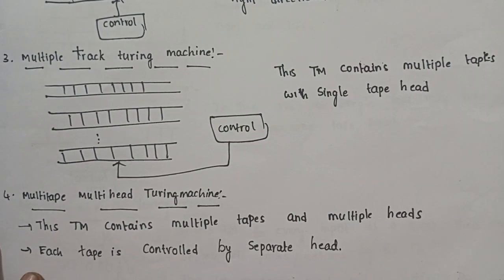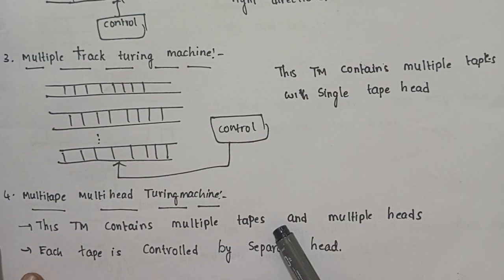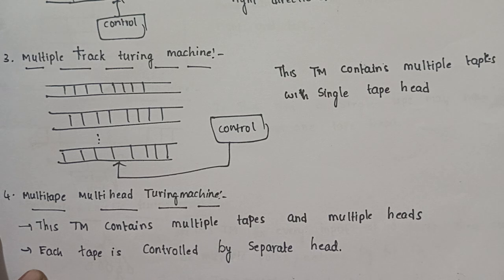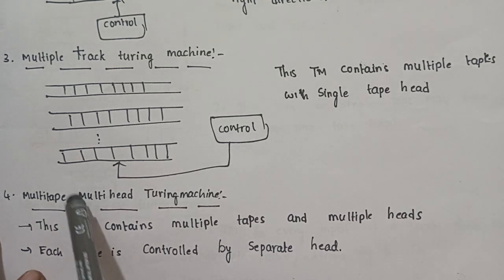Next is the Multi-Tape and Multi-Head Turing Machine. The name itself is telling — if you have multiple tapes, you can control multiple heads. This type of Turing Machine is the Multi-Tape and Multi-Head Turing Machine.